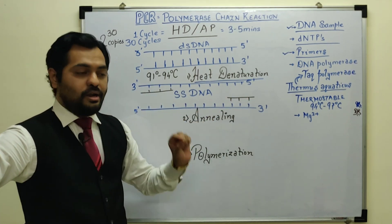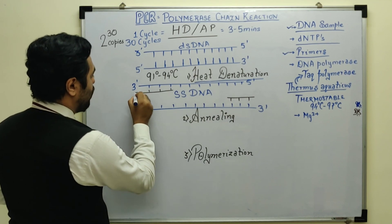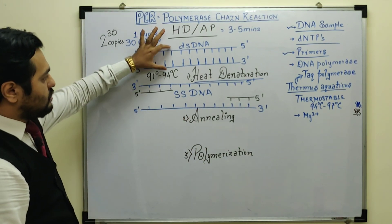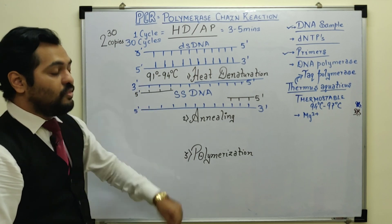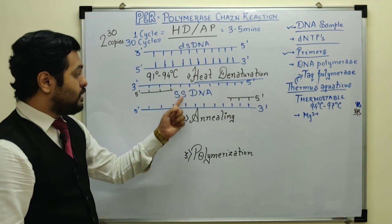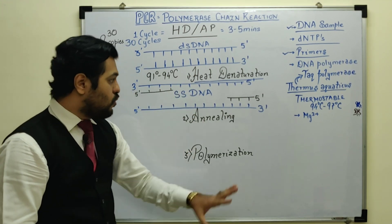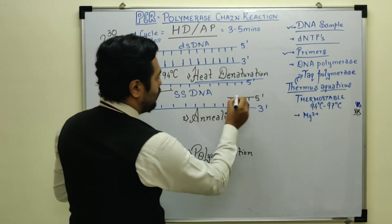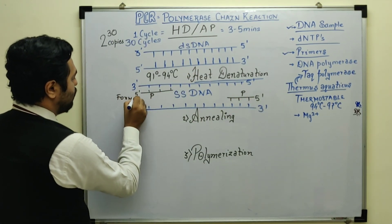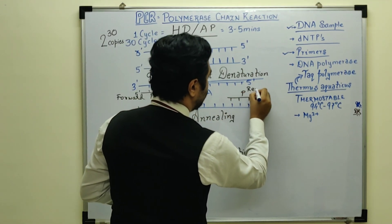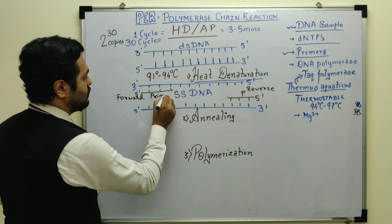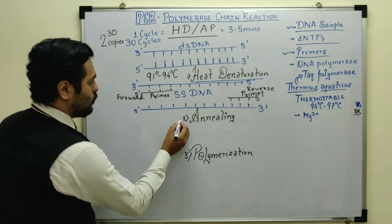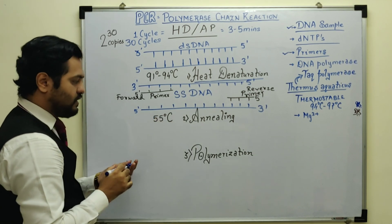Both single-stranded DNA molecules work as templates — both are used as templates here, there is no leading or lagging as such, because artificially designed primers are used. One is known as the forward primer and the other is known as the reverse primer. The attachment of these primers is called annealing, and this annealing process occurs at around 55 degrees Celsius.